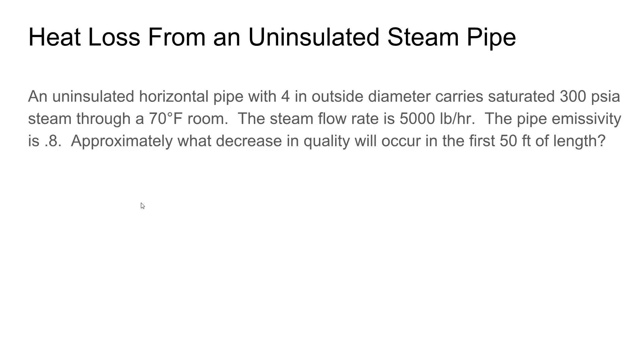Heat loss from an uninsulated steam pipe. An uninsulated horizontal pipe with 4-inch outside diameter carries saturated 300 PSIA steam through a 70-degree room. The steam flow rate is 5,000 pounds per hour. The pipe emissivity is 0.8. Approximately what decrease in quality will occur in the first 50 feet of length?